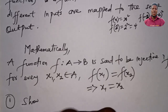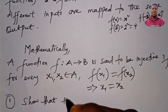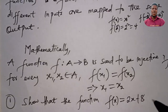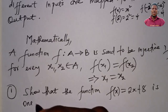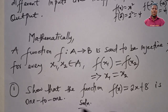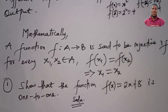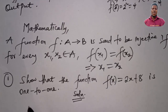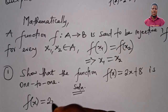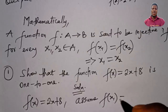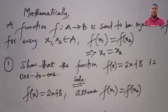Let us show that the function f(x) = 2x + 8 is injective, or one-to-one. We will make use of the definition of an injective function. Two conditions must be satisfied: f(x1) must equal f(x2), and x1 must equal x2 by implication. So let's assume that f(x1) = f(x2).